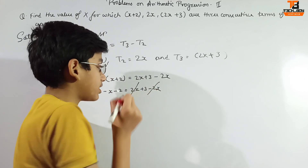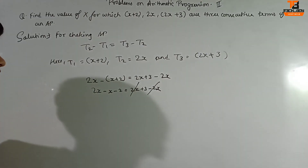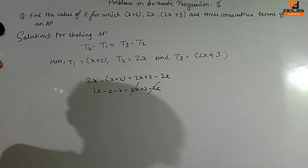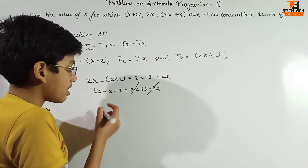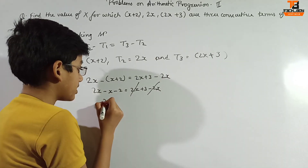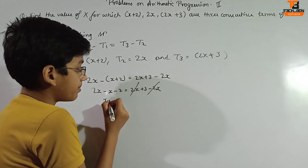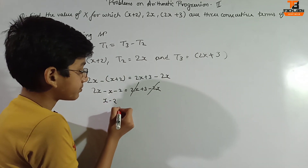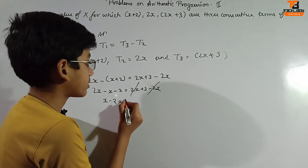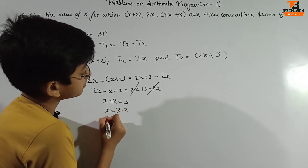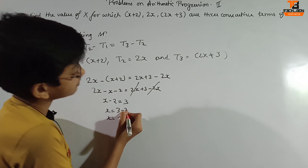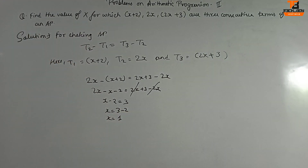After cancelling terms: x minus 2 equals 3. So x equals 3 plus 2, which gives x equals 5. That's a very easy question.